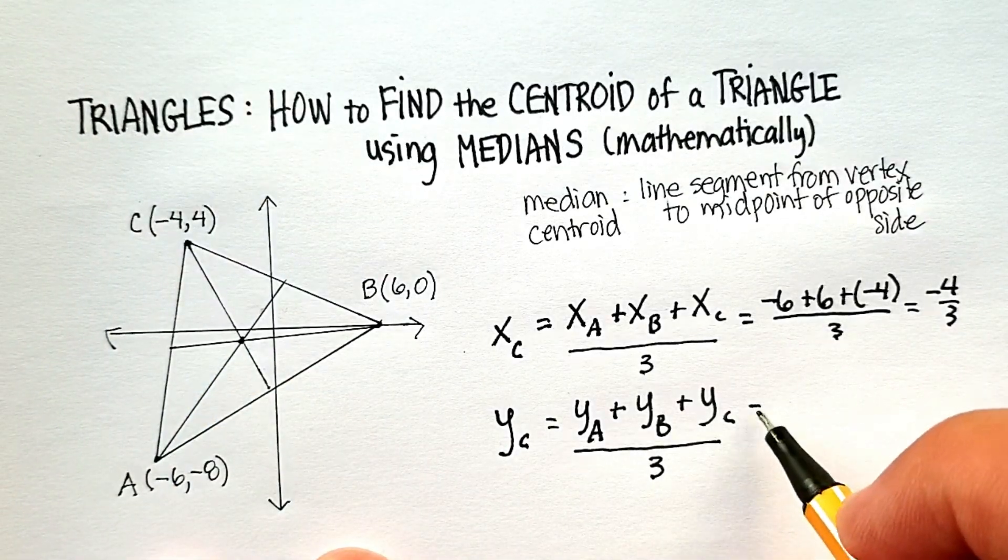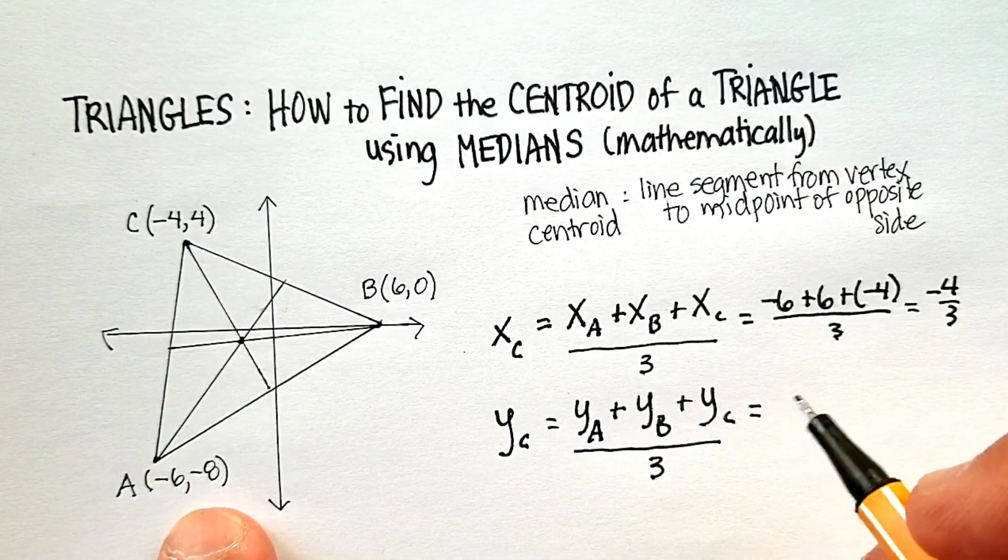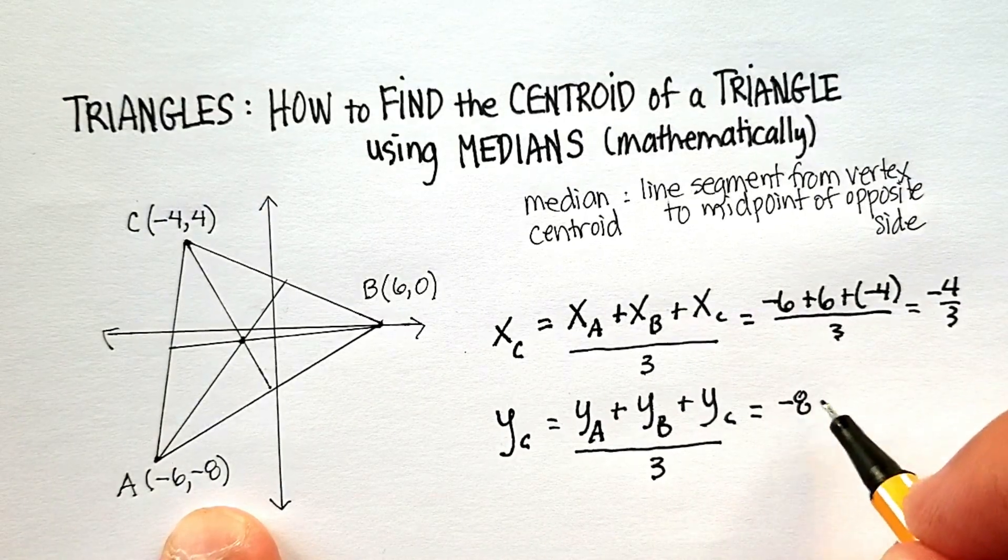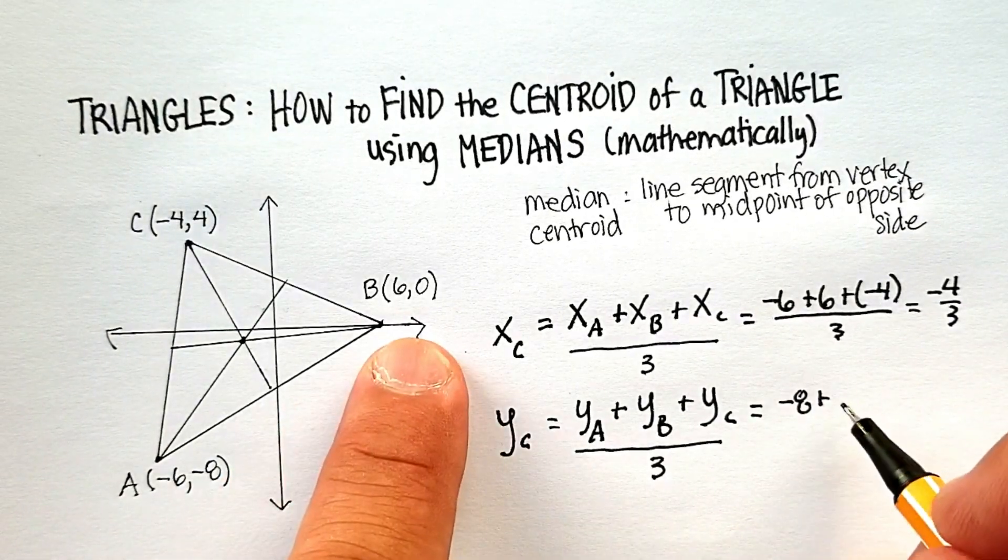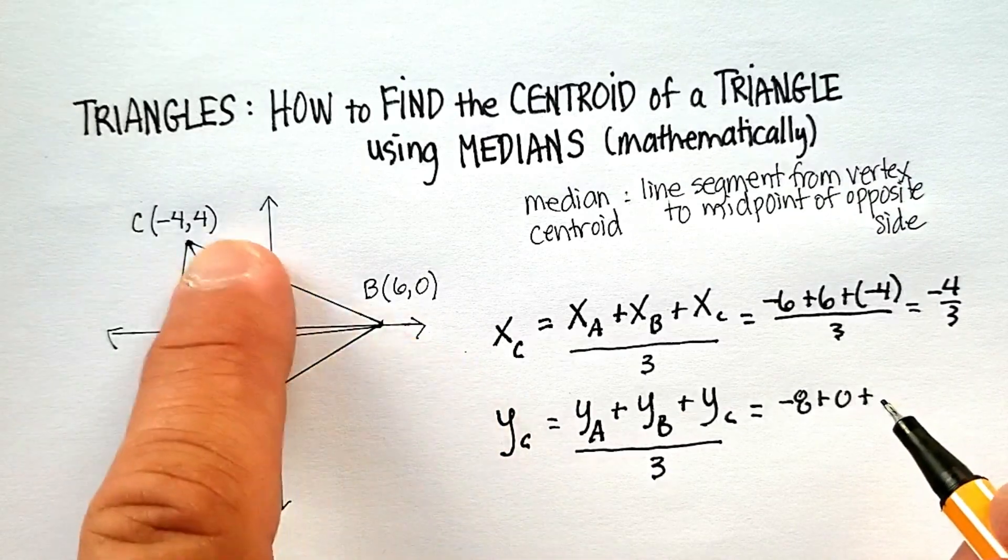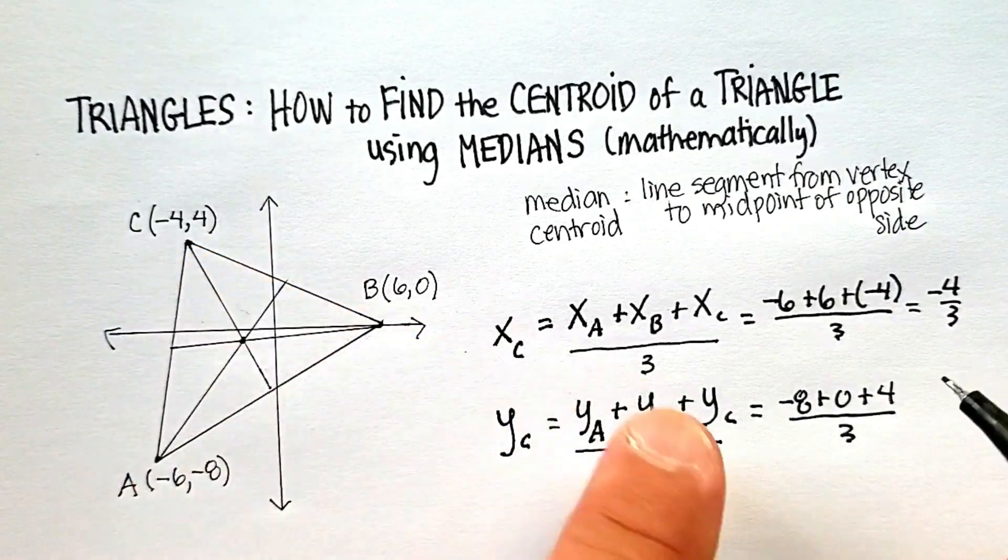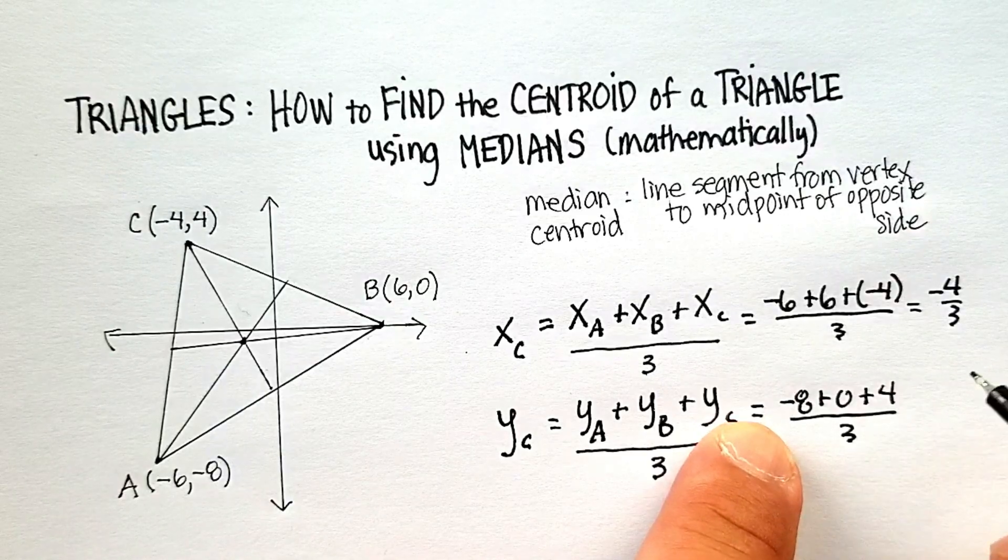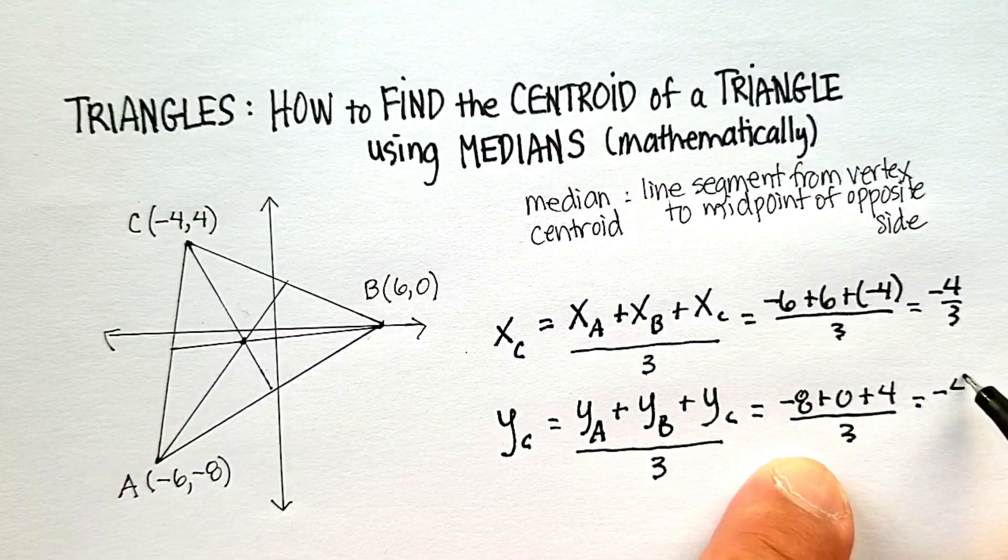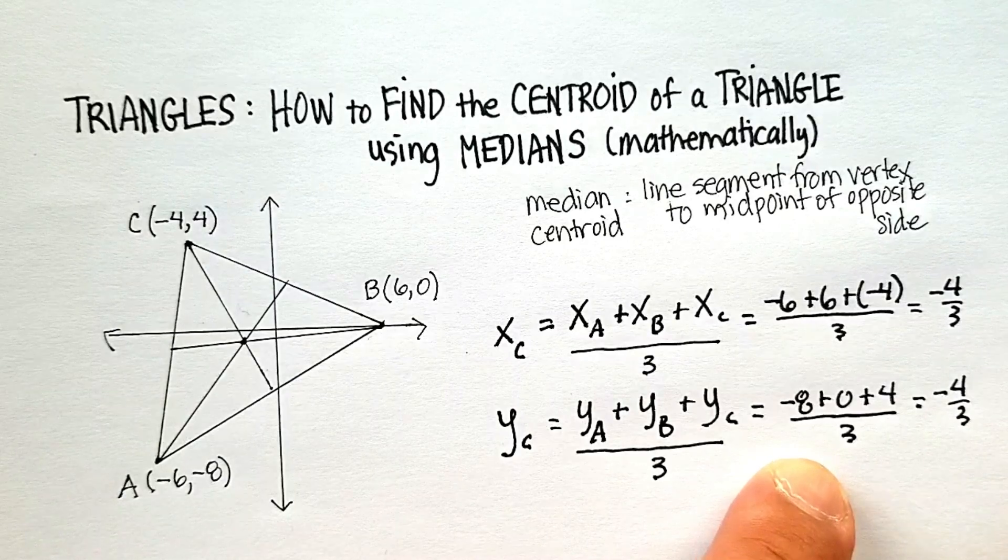Let's try it with the y values. Negative 8 plus 0, plus a positive 4, again, divided by 3. Negative 8 plus 4 is negative 4 over 3. So, negative 4 over 3.